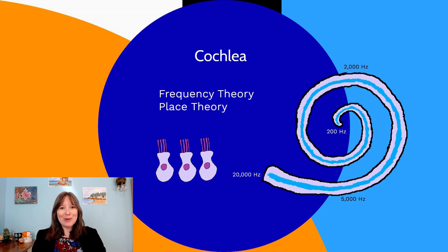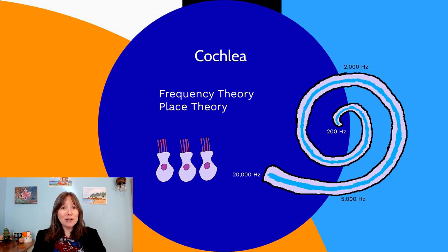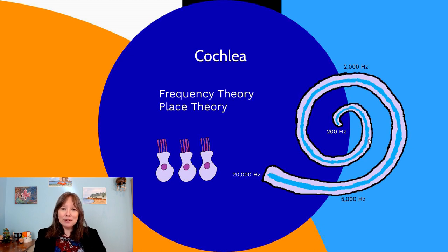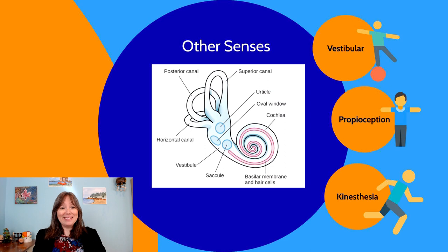Much like with trichromatic and opponent processing theories in vision, both frequency theory and place theory have merit. We now find it's a hybrid of both: different parts of the cochlea are sensitive to different frequencies, and the speed at which the hairs wiggle does depend on the frequency of sound. This also helps explain why we lose sensitivity to certain frequencies across our lifespan — particularly higher frequencies. Since all sound must travel past the base of the cochlea first, the hairs at the entrance get worn out, so high-frequency sounds become less resilient, which is why older individuals become less sensitive to high-pitched noises.